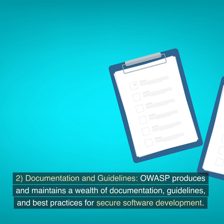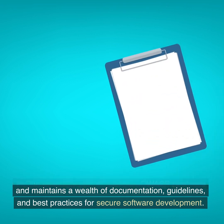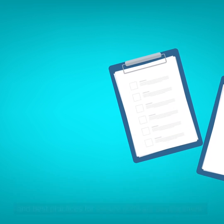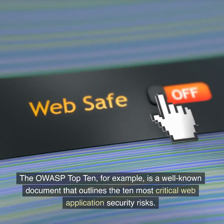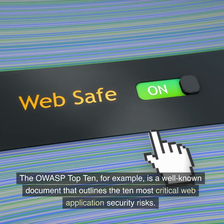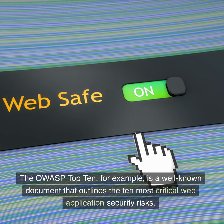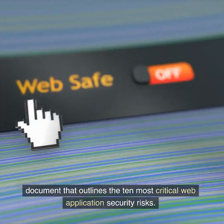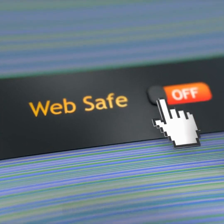Documentation and Guidelines: OWASP produces and maintains a wealth of documentation, guidelines, and best practices for secure software development. The OWASP Top 10, for example, is a well-known document that outlines the 10 most critical web application security risks.